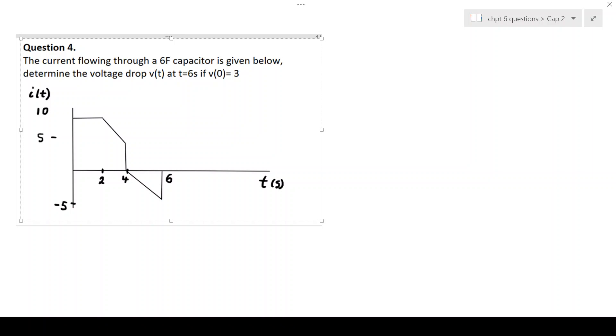So the question we're going to be looking at reads as follows: Determine the voltage drop across the capacitor at t equals 6 seconds, given that the initial voltage is 3 volts, and given that you have a 6 Farad capacitor, and the current flowing through the capacitor is given by the diagram below.